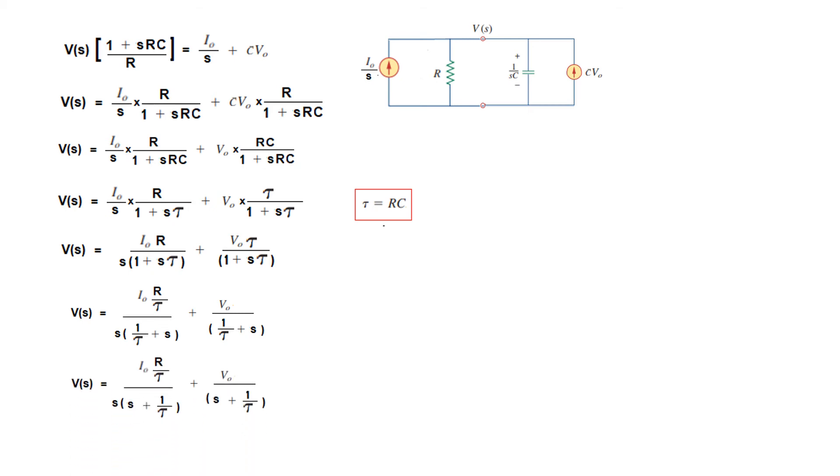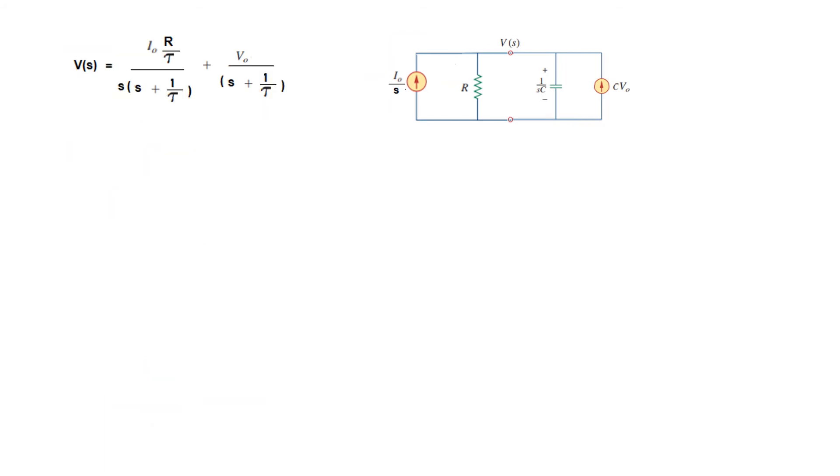We rearrange it again, bringing s first: s(s plus 1 over tau), and here also s plus 1 over tau. This has two factors in the denominator, so we need to use partial fraction to solve this part.